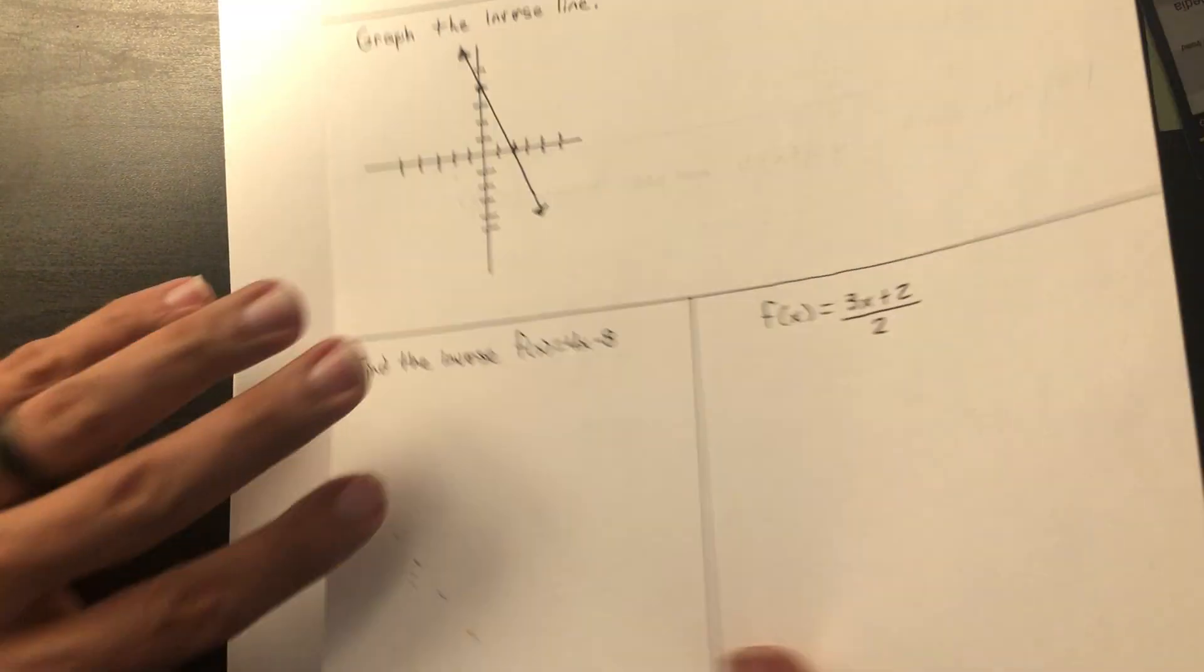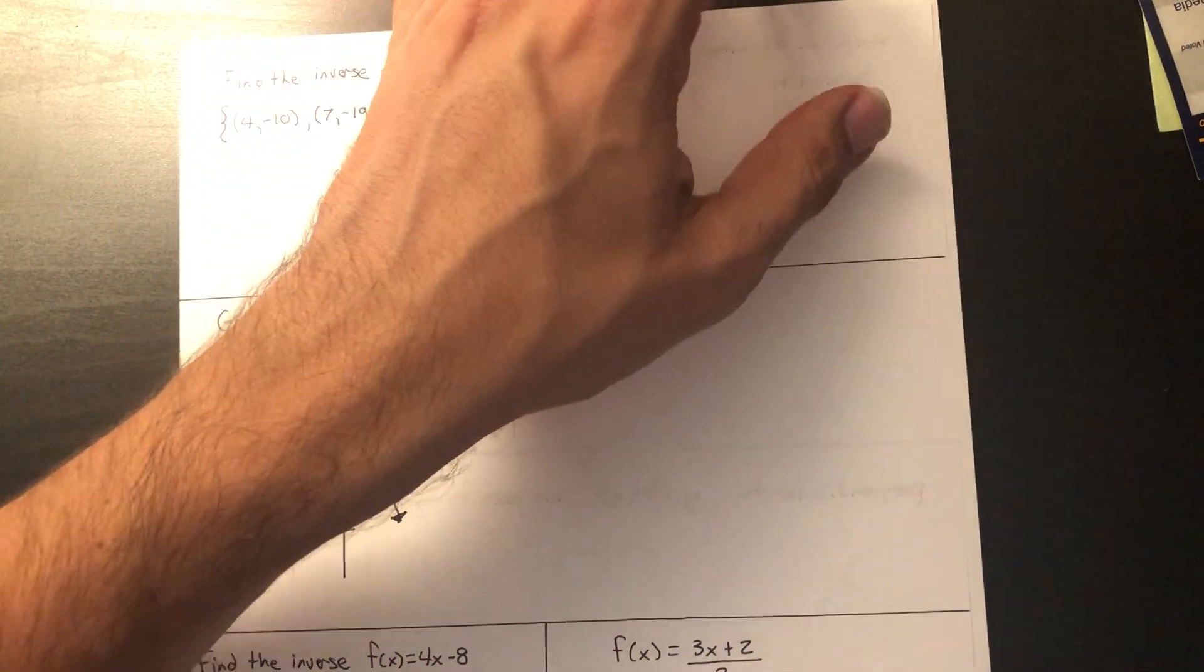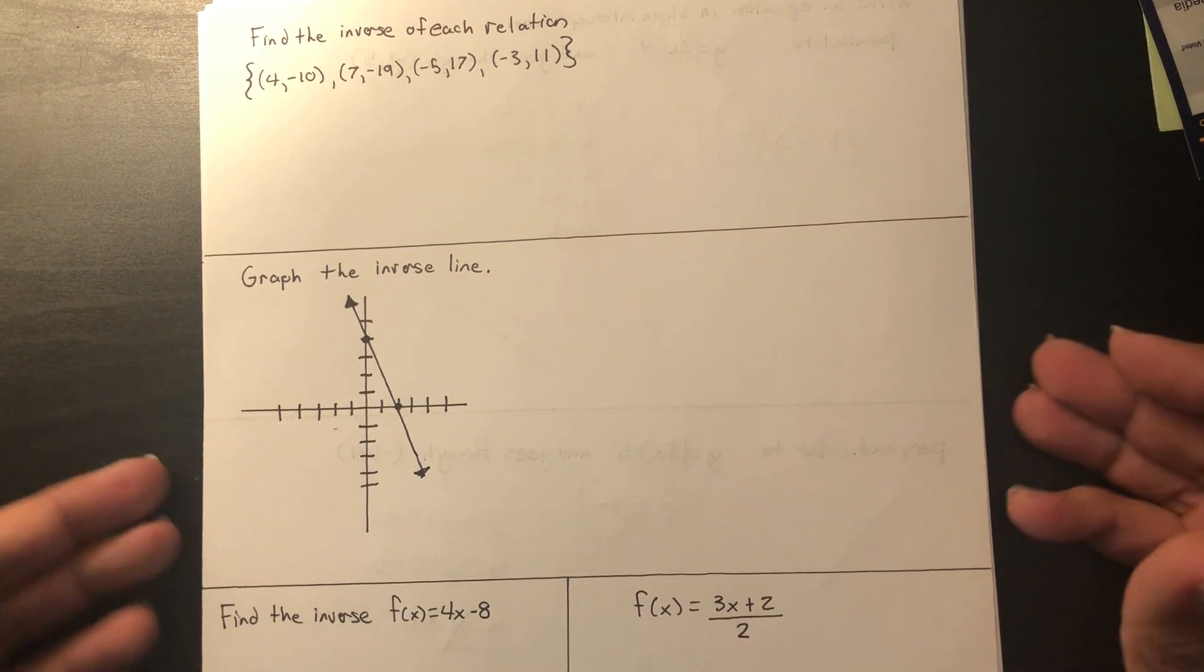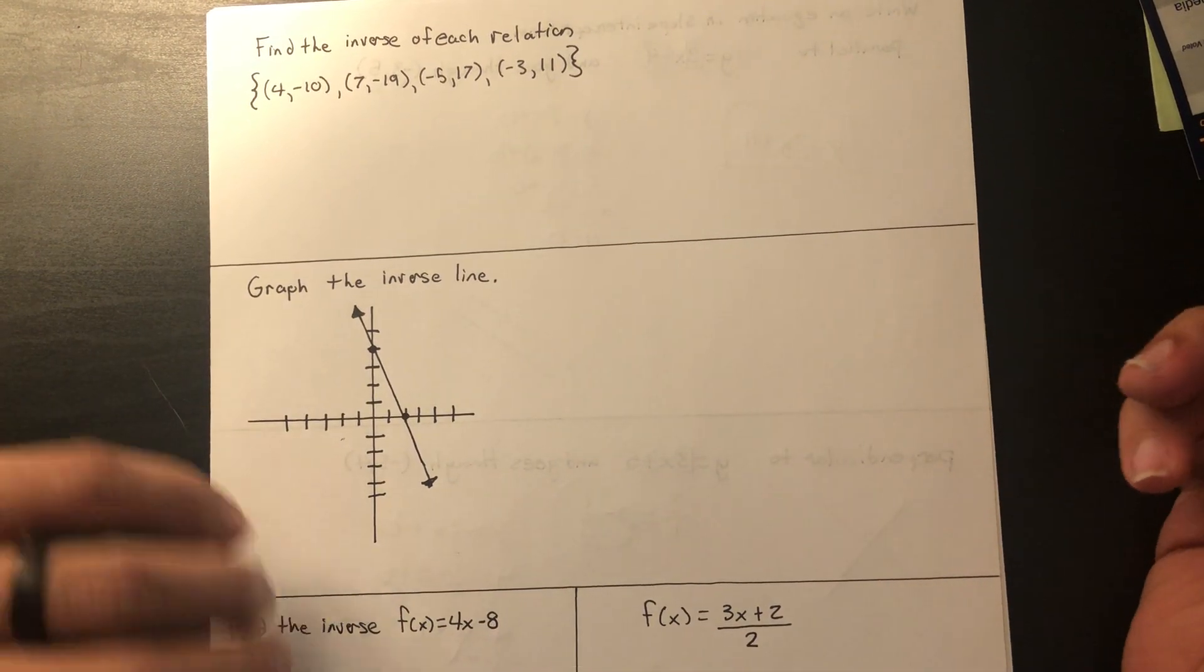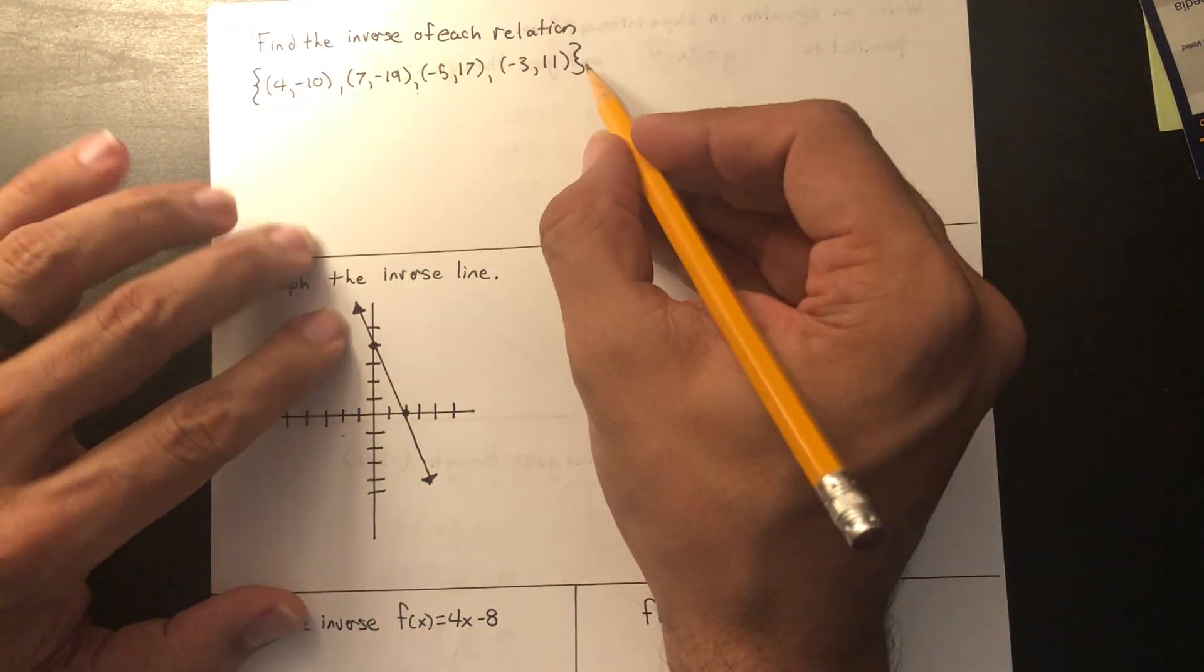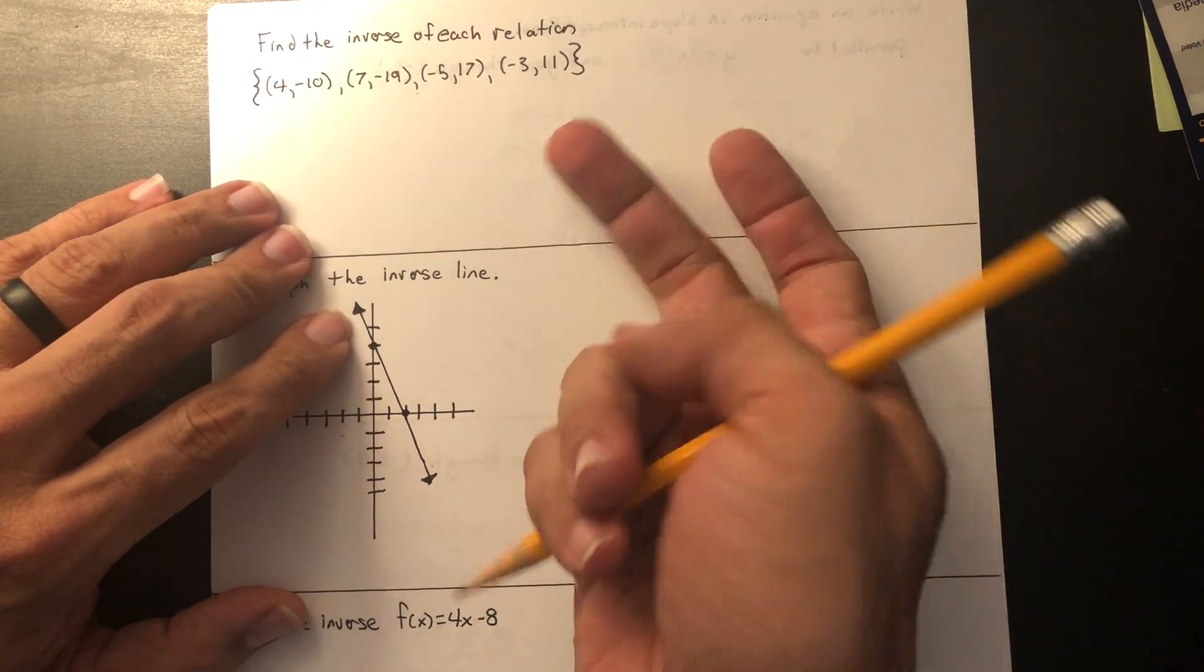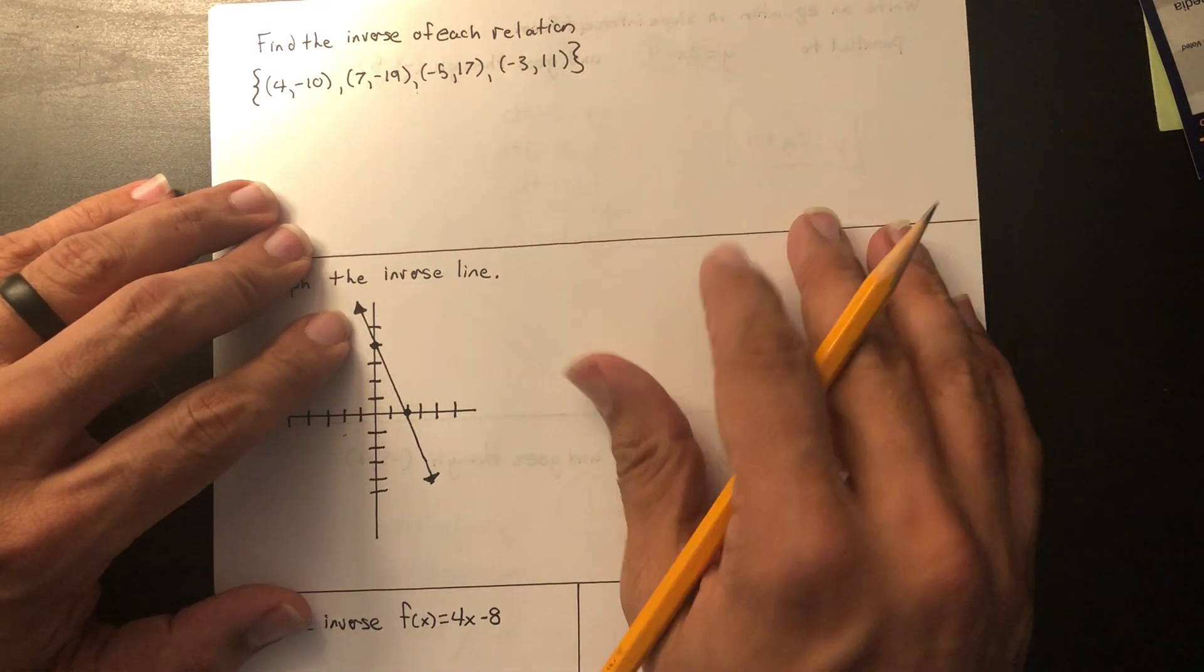Now we're going to do inverse. I know you were expecting me to do scatter plots, but I've never done a video for scatter plots and I will not begin this year. Scatter plots are too simple to go over. Now, inverse. These are the originals and I want to find the inverse. Inverse means that x and y are going to switch places.